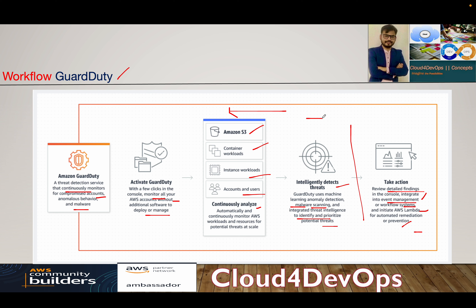There is a production use case in the practical demo where there is a compromised instance and a malicious instance trying to communicate — GuardDuty, with the help of a Lambda function, will stop that server. That's how the GuardDuty workflow looks. I hope this clears things up in terms of the workflow.